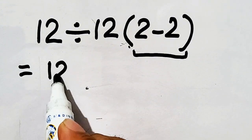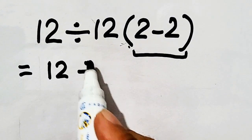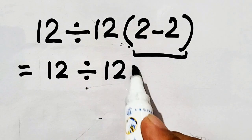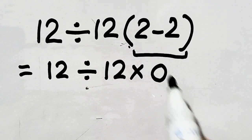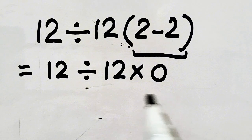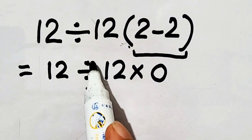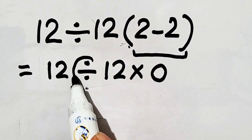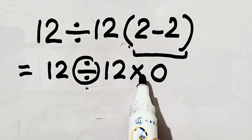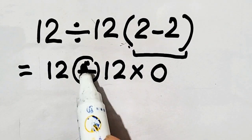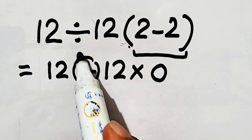So 12 divided by 12 times 2 minus 2 equals 12 divided by 12 times 0. Then, according to PEMDAS, we have to perform division or multiplication, whichever is at left. We will prefer the operation which is at left.